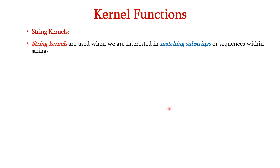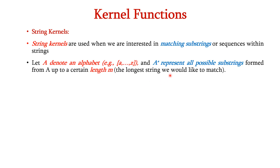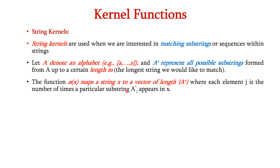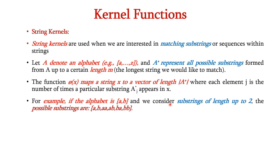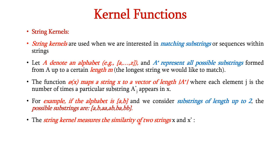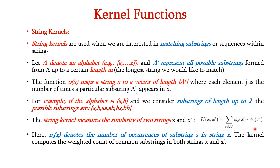Next, let us see about string kernels. String kernels are used when we are interested in matching substrings or sequences within strings. Let 'a' denote an alphabet (for example, a to z) and a-star represent all possible substrings formed from 'a' up to a certain length m. The function pi of x maps a string x to a vector where each element j is the number of times a particular substring appears in x. For example, with alphabet {a, b} and substrings of length up to 2, the possible substrings are: a, b, aa, ab, ba, bb. The string kernel measures the similarity between two strings x and x dash, expressed as K of x comma x dash equal to the summation of pi_s of x into pi_s of x dash, where pi_s of x denotes the number of occurrences of substring s in x. The kernel computes the weighted count of common substrings in both strings.